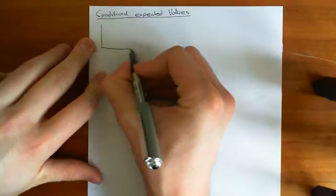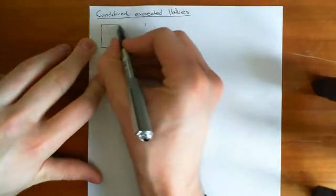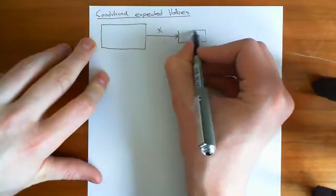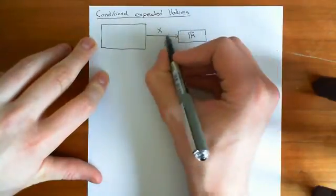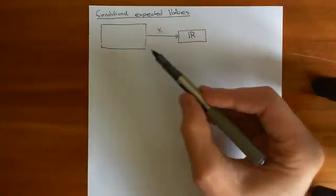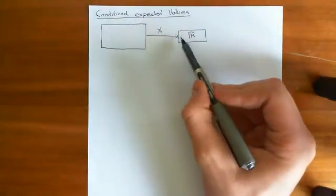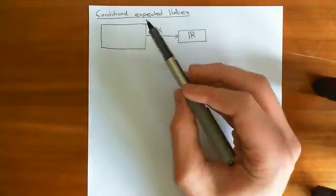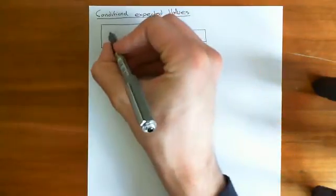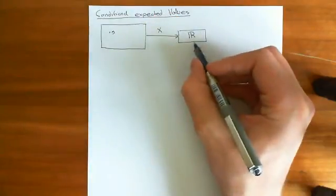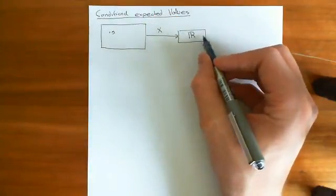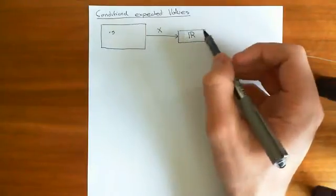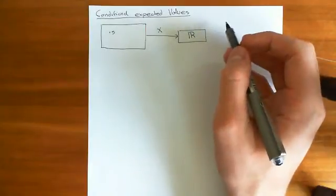Here's the setup. We have a probability space which has some random variable big X, which maps onto the real line. This is going to be a continuous random variable, meaning that the image of this random variable — all the real numbers which the outcomes in this abstract probability space are mapped onto — is going to be an uncountably infinite set, i.e., it's going to have the same cardinality as the continuum. That's why it's called a continuous random variable.